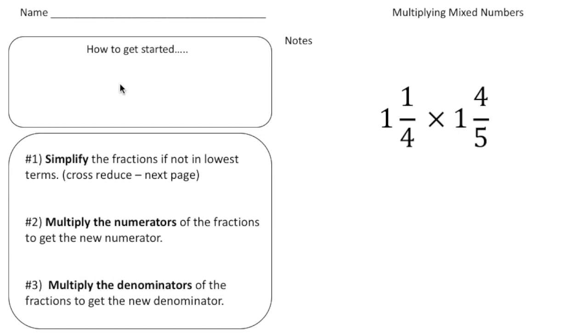But really to get started, the first thing you have to do is change these mixed numbers into rational form. So please write down rational form in this box. Rational form. And really what that means is make these numbers improper.